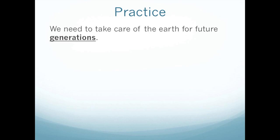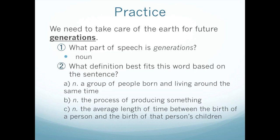Let's try another one: We need to take care of the earth for future generations. In this sentence, what is the part of speech for generations? If you said noun again, you're correct. Let's figure out the definition. Do you think it's A, a group of people born and living around the same time; B, the process of producing something; or C, the average length of time between the birth of a person and the birth of that person's children? If you said A, you're correct.